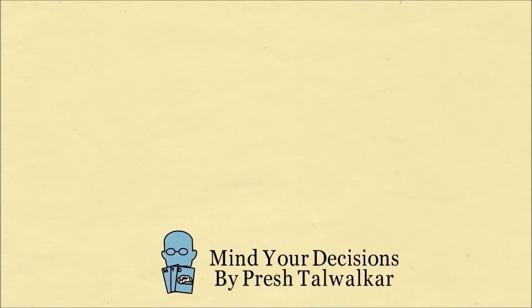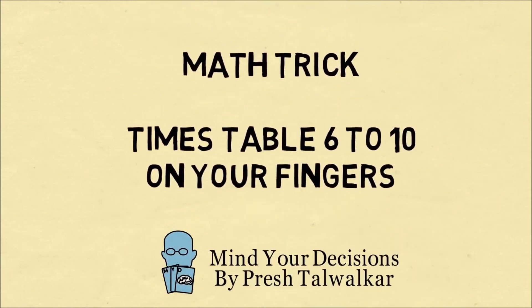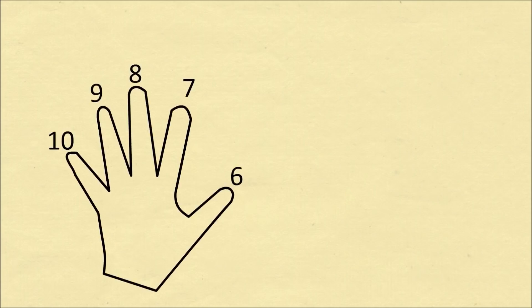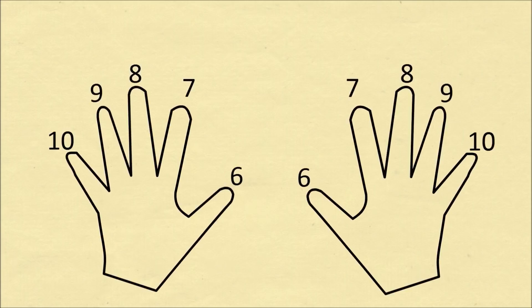Hi, this is Presh Talwalker. In this video I'll teach you how you can do the times table from 6 through 10 on your fingers. You can follow along with me, place your two hands in front of you, and imagine numbering your fingers 6 through 10 going from your thumb to your pinky finger.